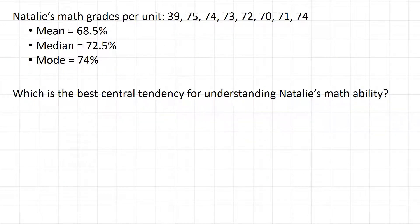Here's another place where mean, median, and mode come up a lot. Here are Natalie's math grades per unit: she got 39 in the first unit, then 75, 74, 73, 72, 70, 71, and 74. The mean of this list is 68.5%, the median is 72.5%, and the mode is 74, which repeats.